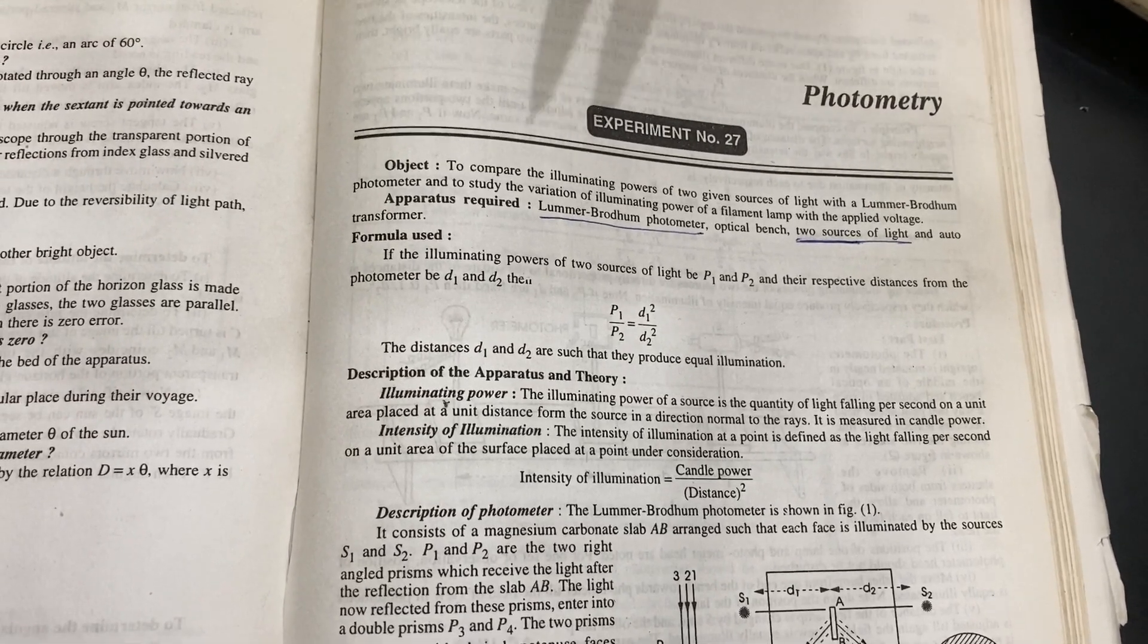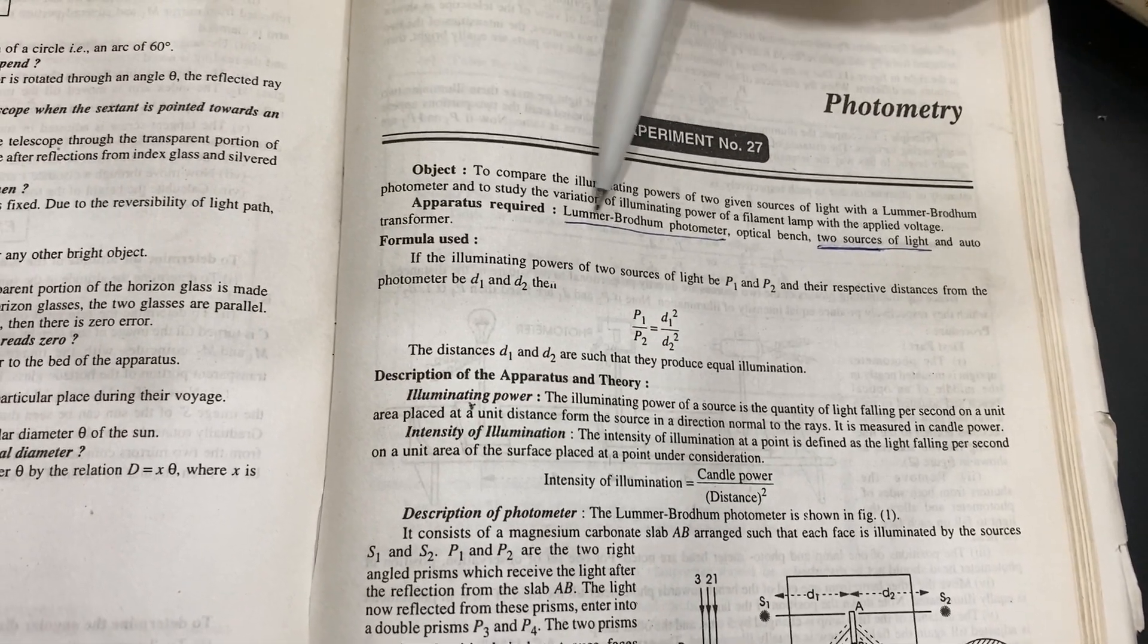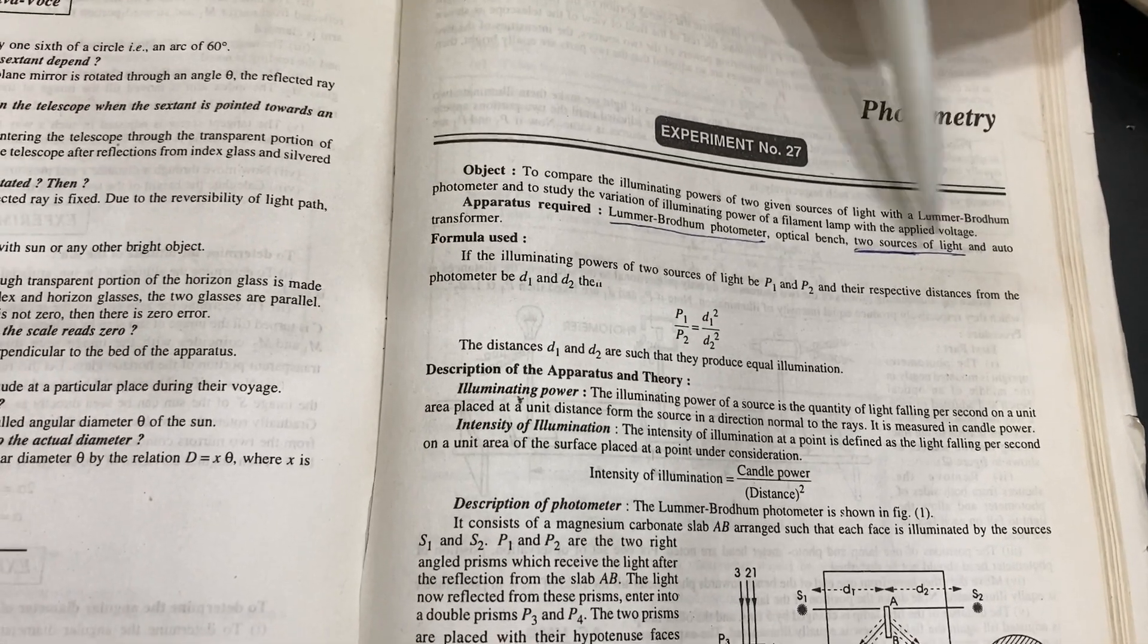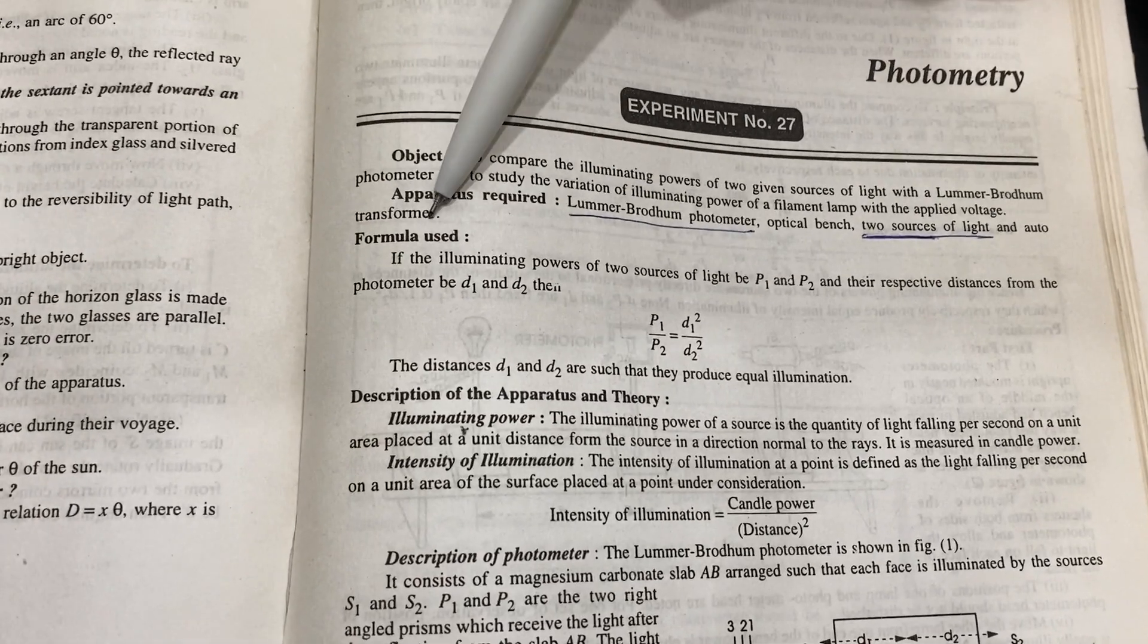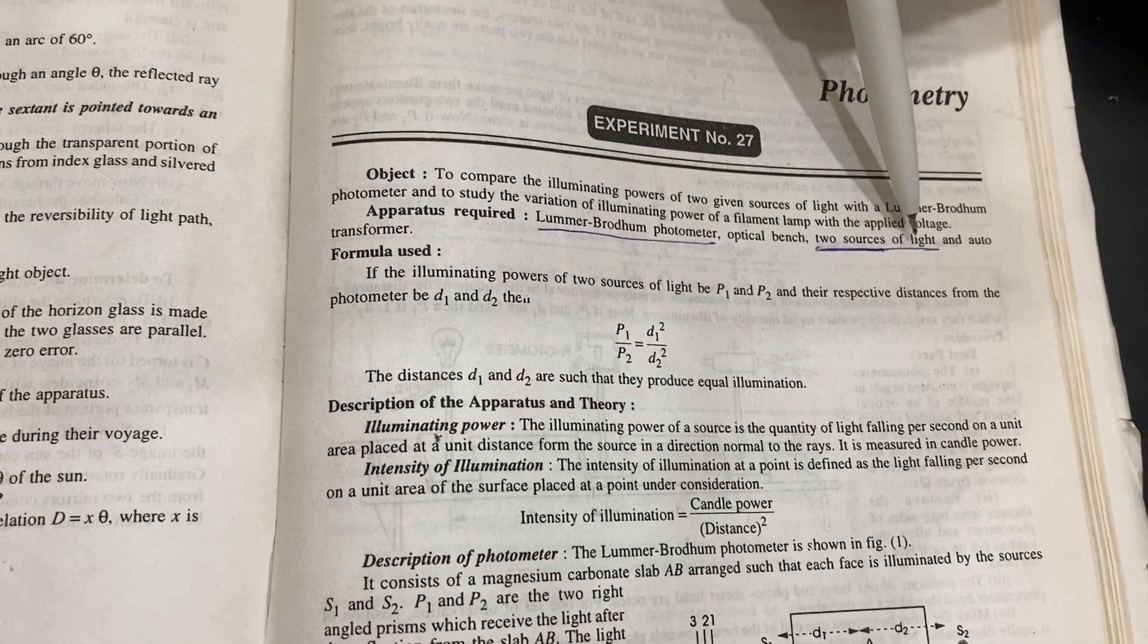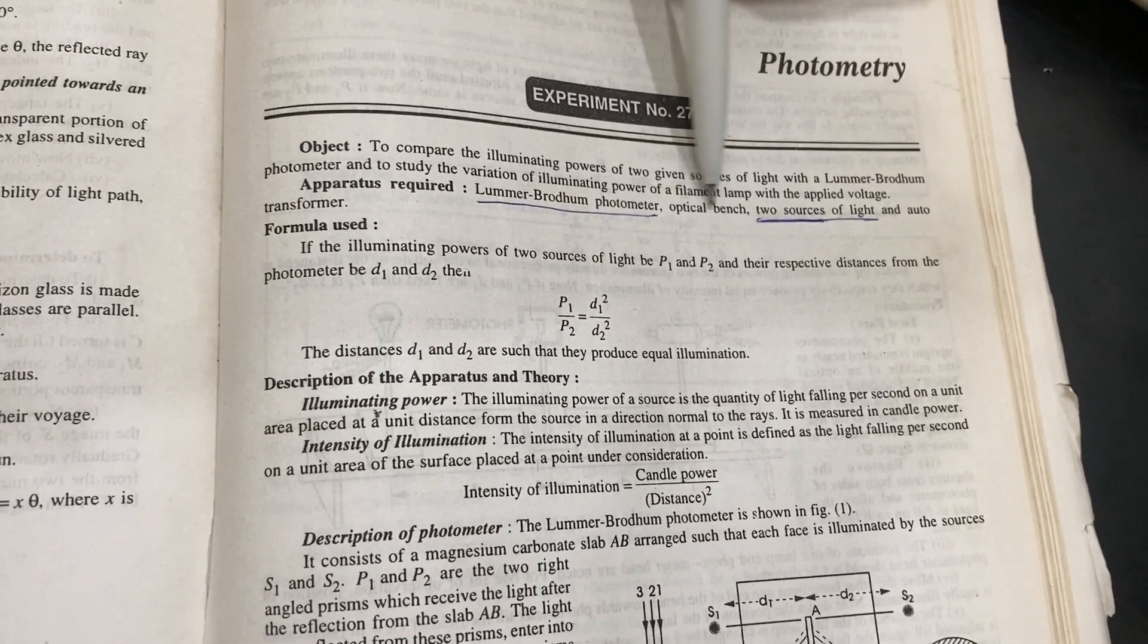You can change the voltage from any used potentiometer. We supply the Lummer-Brodhun Photometer and two lamp sources in this setup. Auto transformer is by you, or you can change the variable potentiometer for light, and optical bench is also optional.